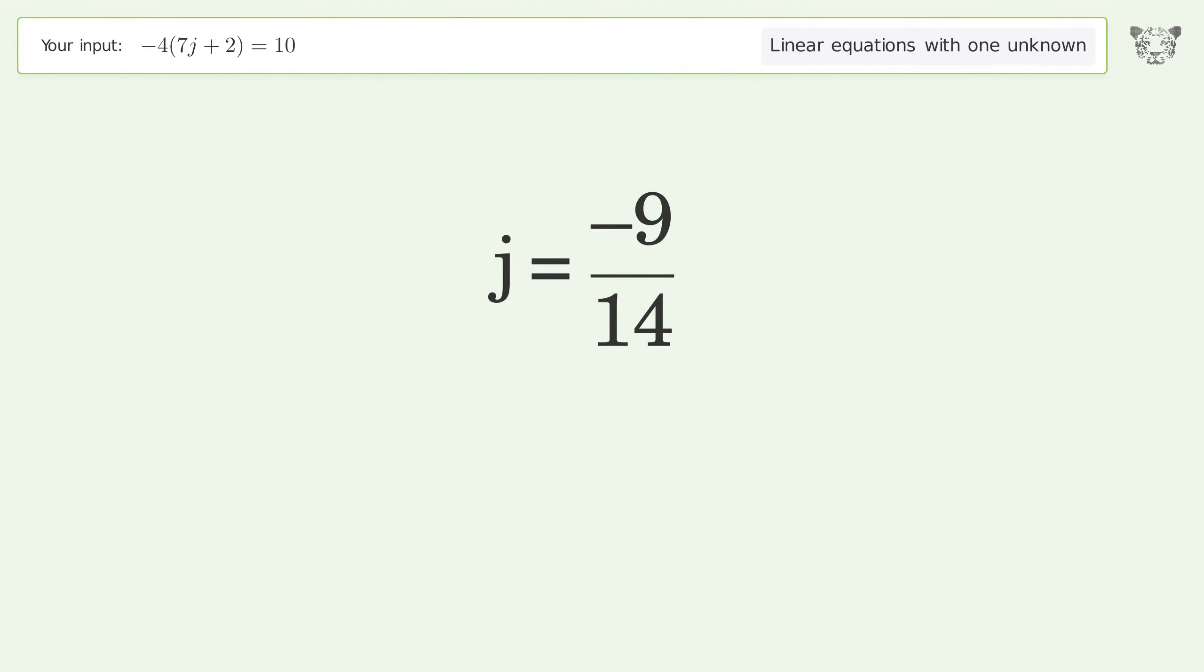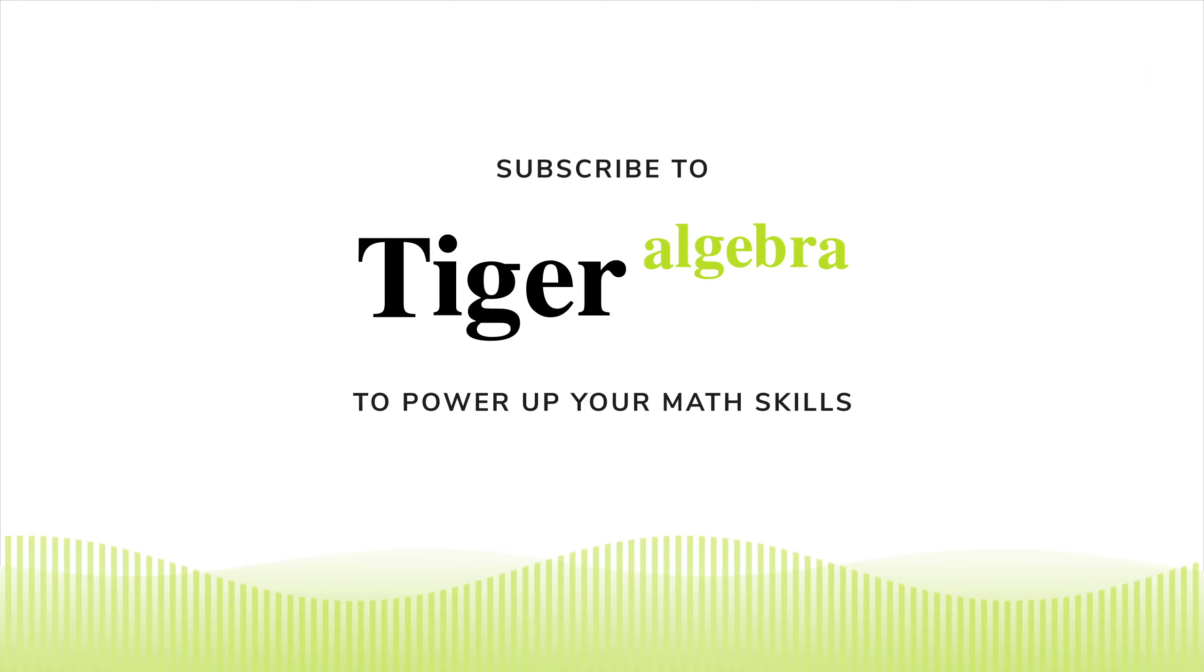And so the final result is j equals negative 9 over 14.